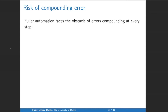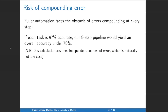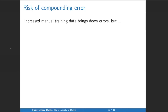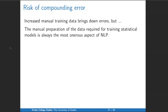I want to flag the risk of compounding error rates. More full automation faces the obstacle that errors compound at every step. If each step was 97% accurate, then this eight-step pipeline would yield an overall accuracy of 78%. However, don't put too much stock in these calculations because that calculation assumes the errors at each level are independent, whereas of course they're not — they rely directly on each other. The concrete results might be a lot worse or a lot better depending on what kind of error is made. The manual preparation of data required for training statistical models is always the most onerous aspect of NLP — it's extremely expensive and very boring to compile.